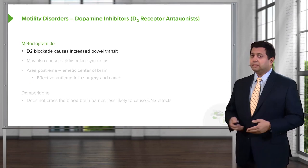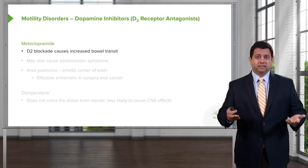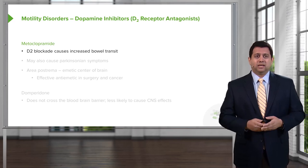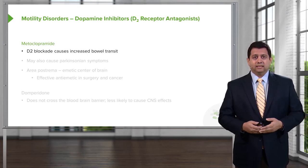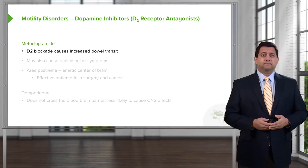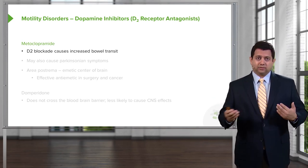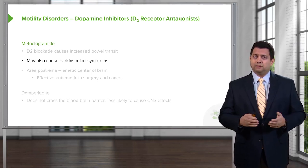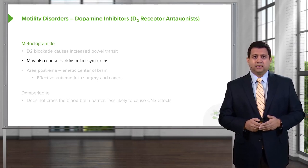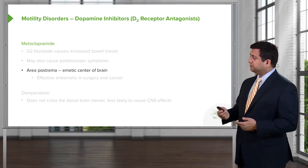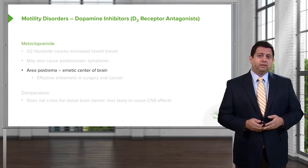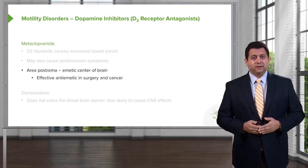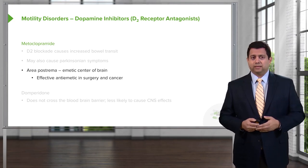Other agents include the dopamine receptor antagonists, specifically the D2 receptors. Metoclopramide is your prototypical example. It causes D2 blockade, which leads to increased bowel transit — things move a little quicker. It may also cause Parkinsonian symptoms, so you have to be careful. It also works in the area postrema, which is part of the emetic center of the brain, making it a very effective anti-emetic in surgical and cancer patients.